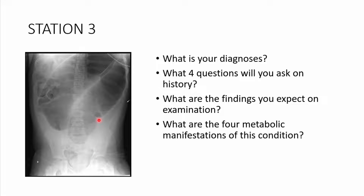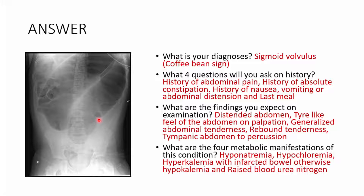You can pause the video now. The answer: this is sigmoid volvulus. As we can see, this is a coffee bean sign. For history, you ask about abdominal pain, absolute constipation — not passing feces or flatus — and nausea, vomiting, or abdominal distention.